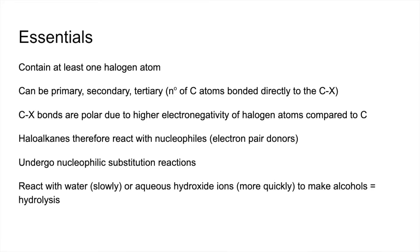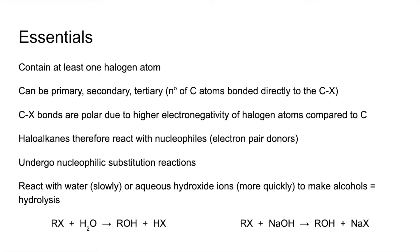An example of that is they react with water slowly, or with aqueous hydroxide ions more quickly, to make alcohols — and that's known as hydrolysis. The equations for those reactions you can see on the screen now. RX represents the haloalkane and ROH is the alcohol. HX would be a hydrogen halide and NaX would be a sodium halide.